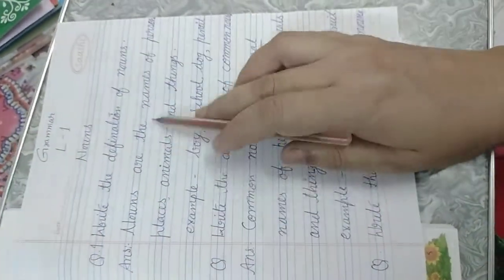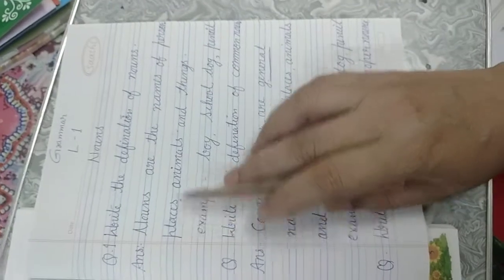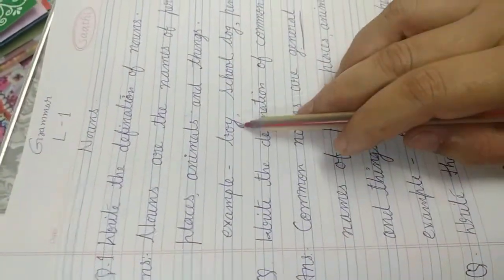Noun. Write the definition of noun. Nouns are the names of persons, places, animals, and things. For example: boy, school, dog, pencil.